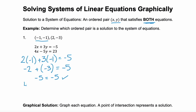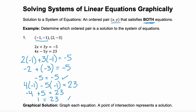The second equation would be 4 times negative 1 minus 5 times negative 1 equals 23. So negative 4, and negative 5 times negative 1 is a positive 5, equals 23. Well, negative 4 plus 5 sums to just 1. Does 1 equal 23? No, it doesn't. So since this ordered pair, negative 1, negative 1, did not work in the second equation, it is not going to be the solution for this system.